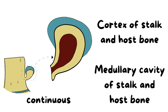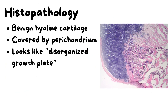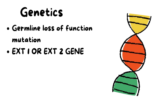Histopathologically, the cartilaginous cap is made of benign hyaline cartilage and is covered by perichondrium — it looks like disorganized growth plate. Regarding genetics, there is germline loss-of-function mutation in the EXT1 and EXT2 genes. This genetic involvement is more commonly seen in the multiple hereditary exostosis type than the solitary type.